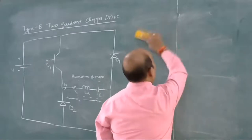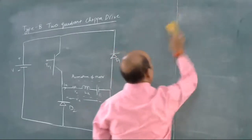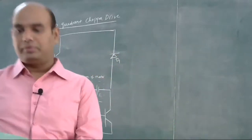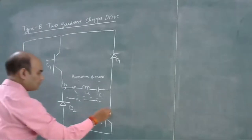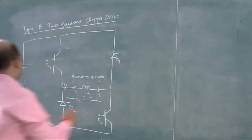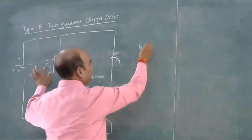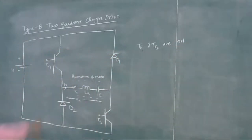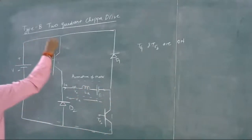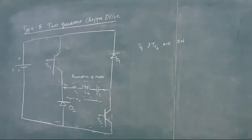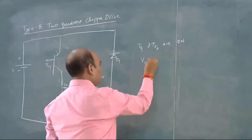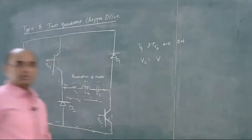When TR1 and TR2 are on, current will flow through the armature and voltage across the armature will be equal to the input supply voltage V.